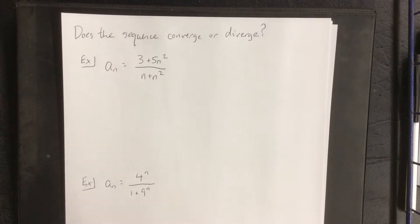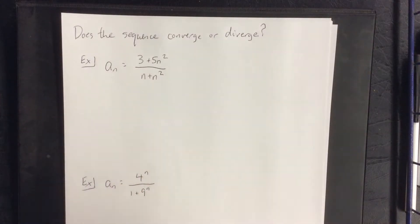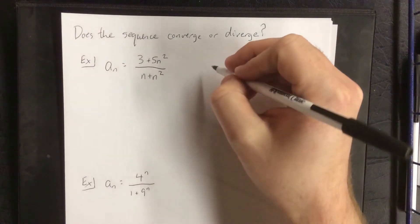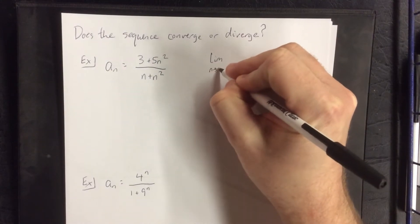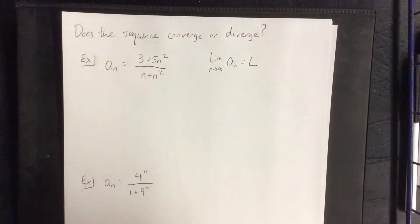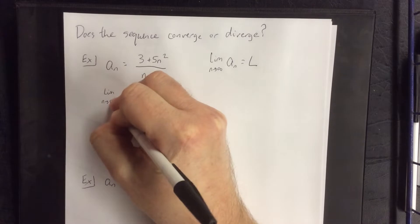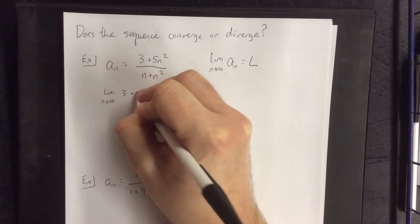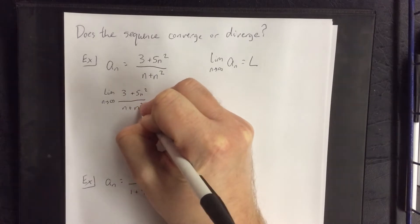The first sequence we're going to take a look at is a_n = (3 + 5n²) / (n + n²). As a reminder, something converges if we can take the limit as n goes to infinity of a_n and actually come up with a value — if we come up with a value, then it converges to that value. So we're going to consider the limit as n goes to infinity of (3 + 5n²) / (n + n²).